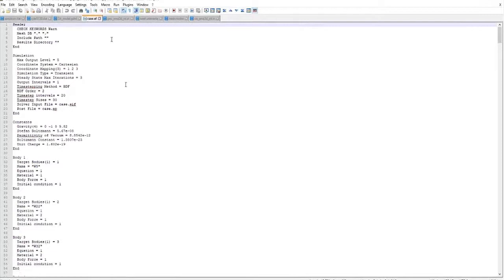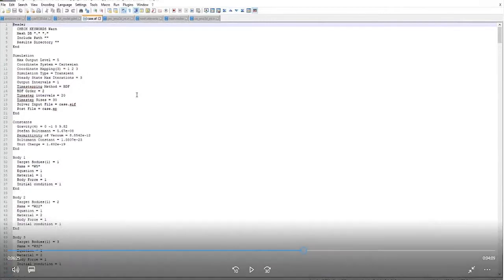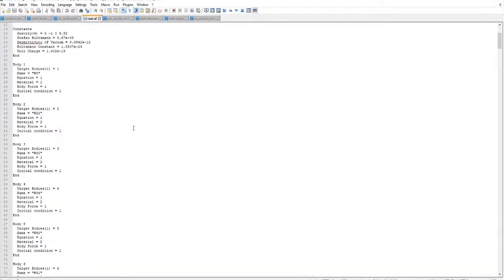And finally, you have the case.sif file, which is used to look at the Elmer properties, so like the time-step sizes, the number of time-step intervals. You can control the output intervals. So, you can control the size of your output file, your final simulation output file. This has information about all the different bodies that were included, including like the material that you assigned to it. So, you can control a lot of your simulation outside of the GUI, but generally, it's not necessary.